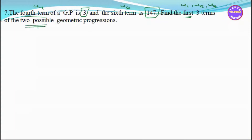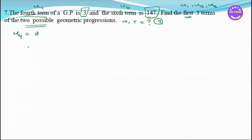Of the two possible geometric progressions, we need to find the first term. Let's see: we have U4 equal to 3, and U6 equal to 147.